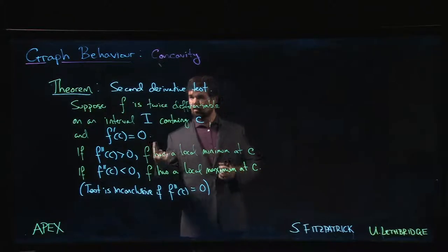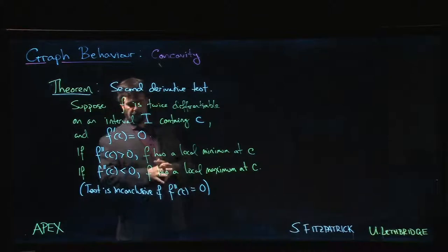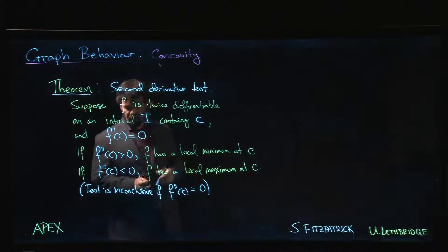If you have a critical number corresponding to a place where the first derivative is zero, you can look at the second derivative and look at the sign. If the second derivative is positive you've got a local min; if the second derivative is negative you've got a local max.